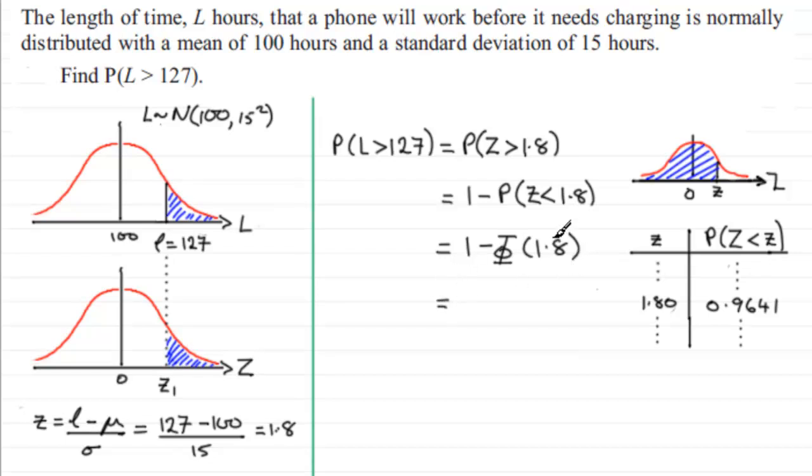Well anyway, from our tables, all we need to do is look up our Z value of 1.8 and read off what we've got here, which is 0.9641. So you've got 1 minus 0.9641, and if we work that out, you end up with 0.0359.